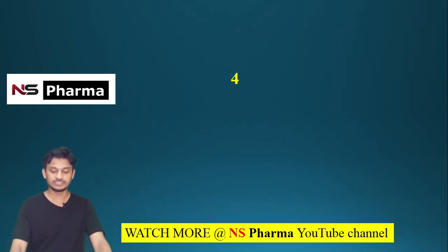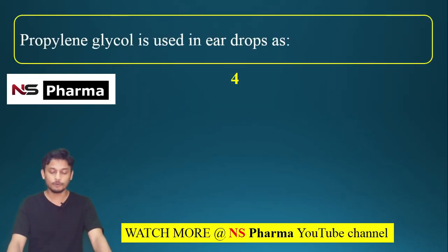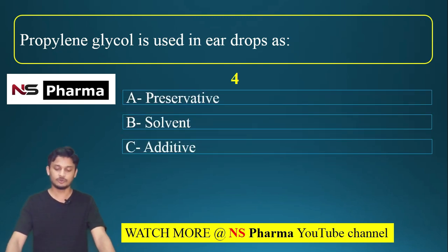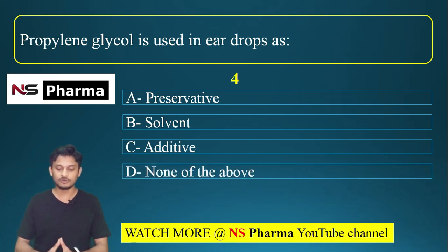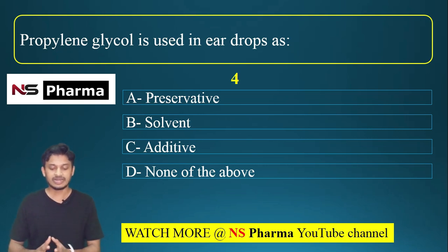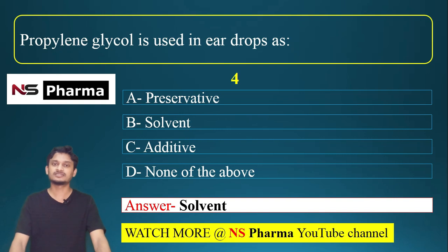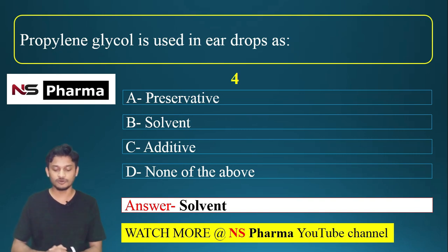Question number 4: propylene glycol is used in eardrop as — options are preservative, solvent, additive, or none of the above. The correct answer is option B, solvent. Propylene glycol is used as a solvent in eardrop preparation. Another example of a solvent used in eardrops is anhydrous glycerol.